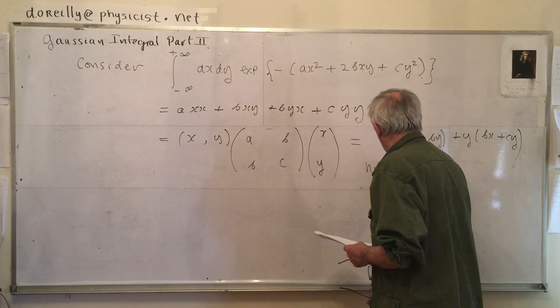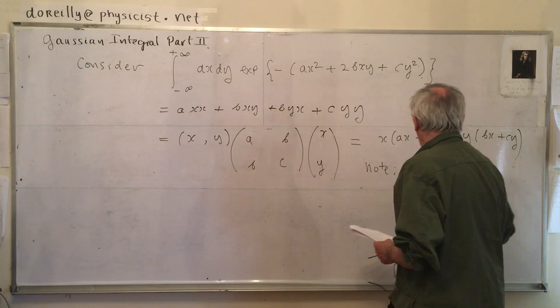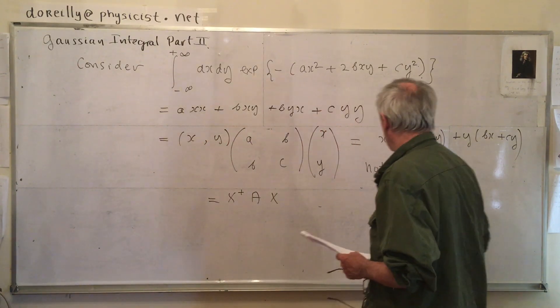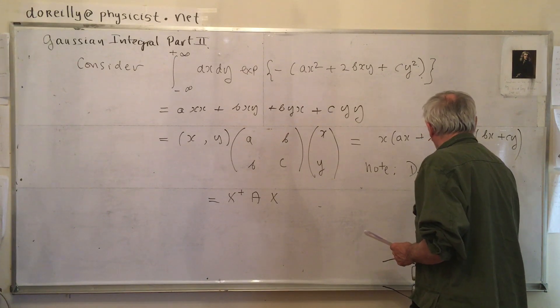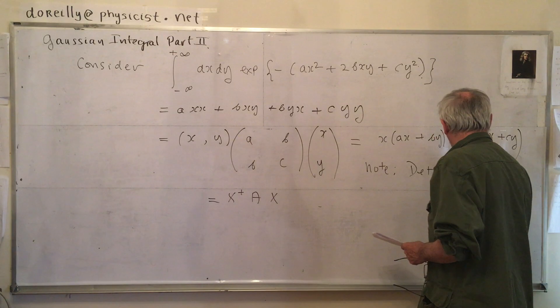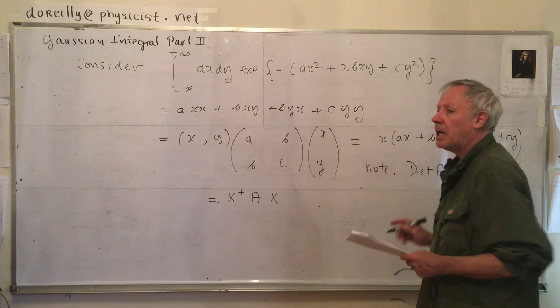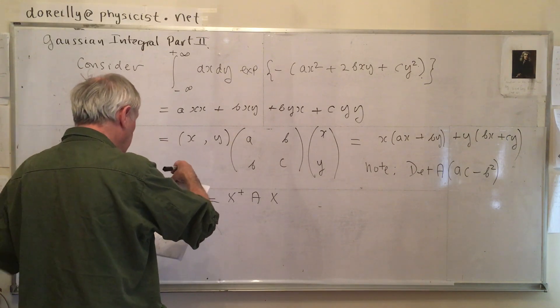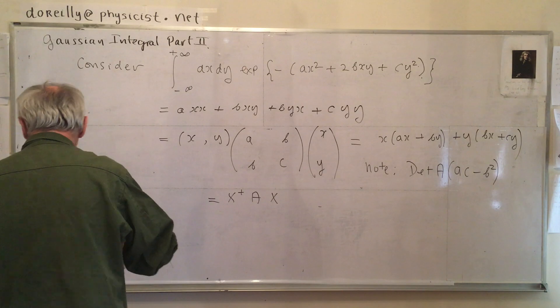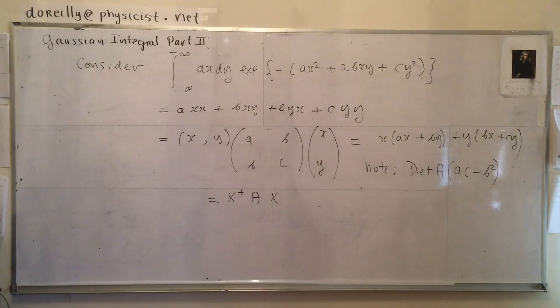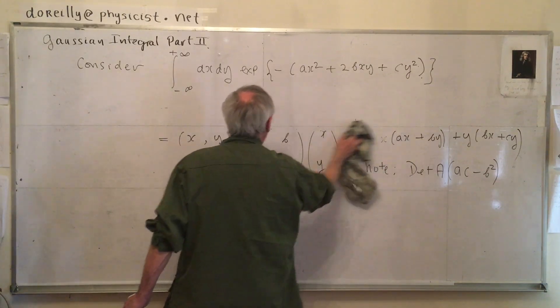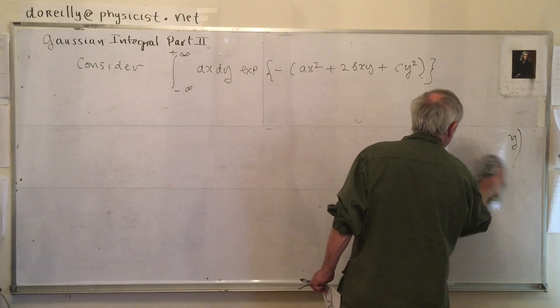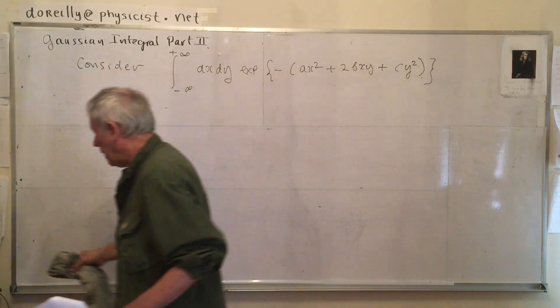x into A x plus B y plus y into B x plus cy. Now, note, if this is the matrix A, we'll call this, we'll call that that. The determinant of this is AC minus B squared. I'm going to keep that in our heads, because we only use it in a minute.